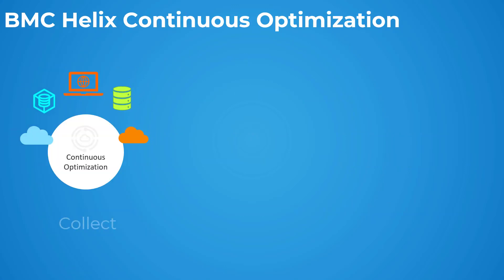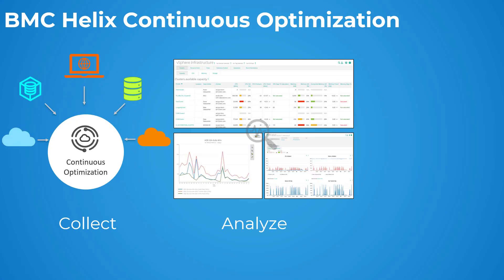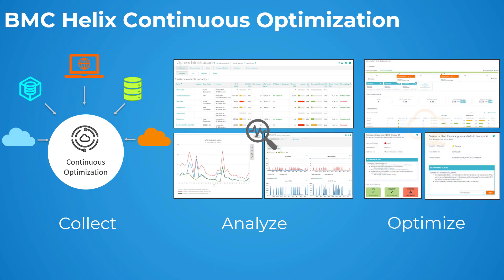With BMC Helix Continuous Optimization, connect to various data sources and collect data, and then use the collected data for analyzing and optimizing the capacity of your infrastructure.